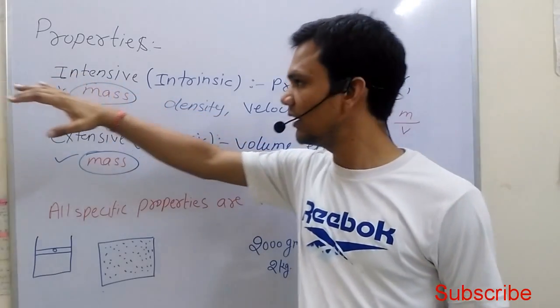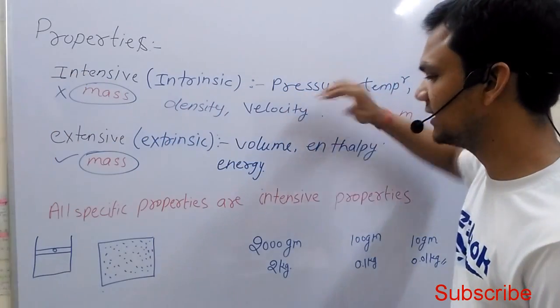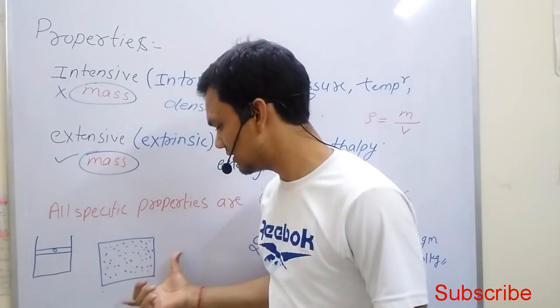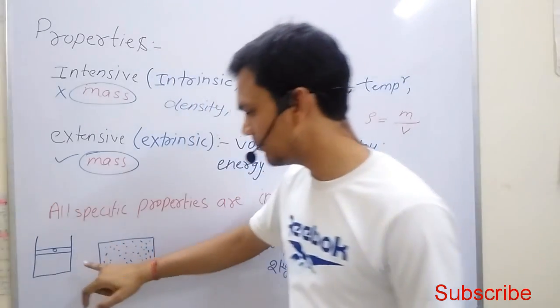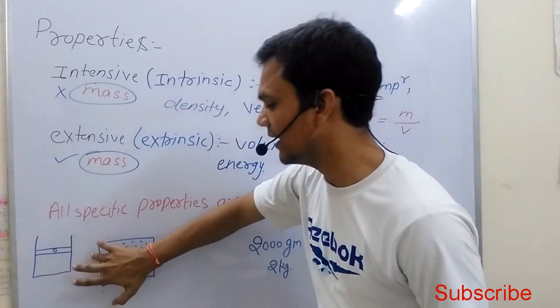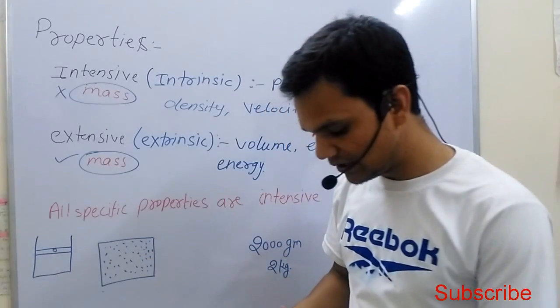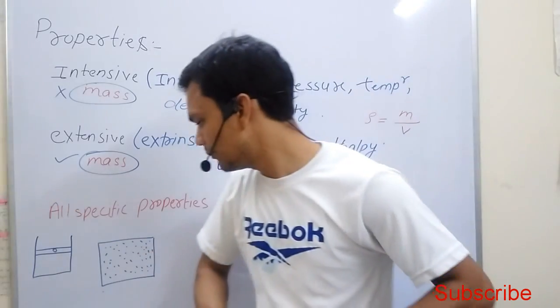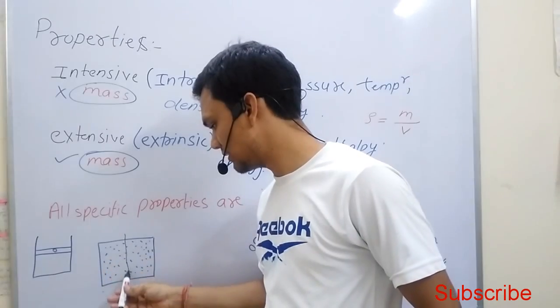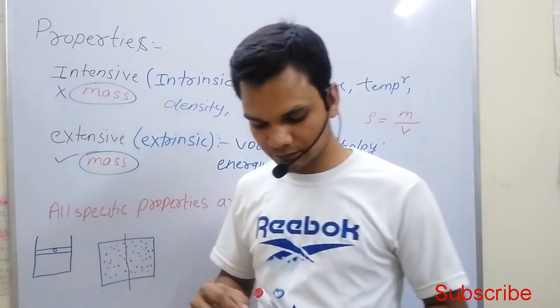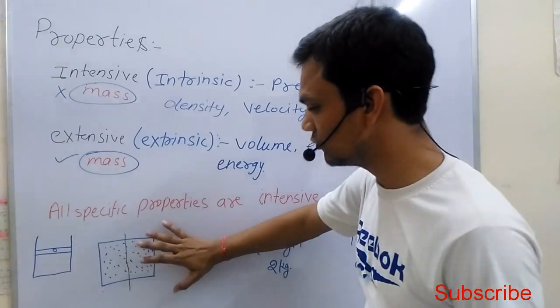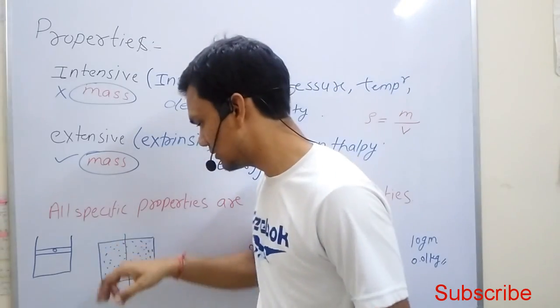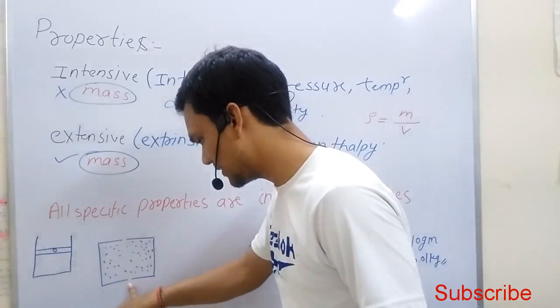Let's take another example of intensive properties - that is pressure. If you want to measure pressure in this container, you can measure it with a pressure gauge by attaching it here or here. If we divide this container into two parts, the pressure will remain the same. So there is no effect of mass on pressure measurement.